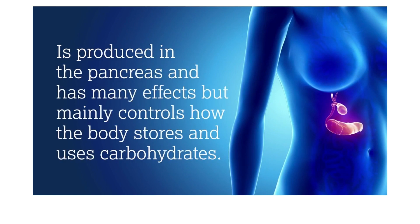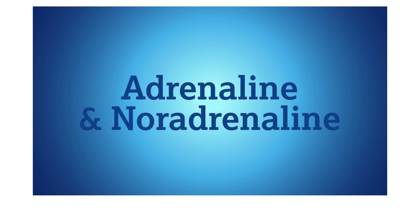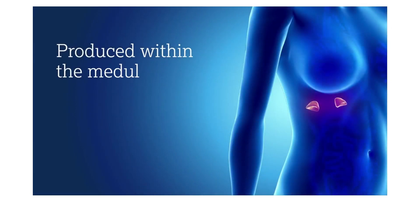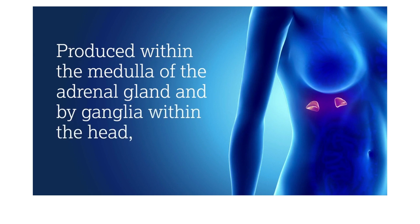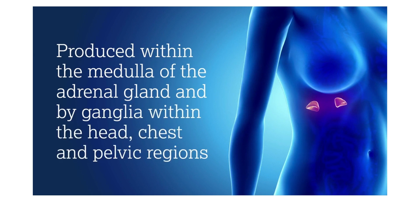Insulin and glucagon help regulate blood glucose levels. Adrenaline and noradrenaline, produced within the medulla of the adrenal gland and by ganglia within the head, chest, and pelvic regions of the sympathetic nervous system, together work to balance the fight or flight response in times of stress.